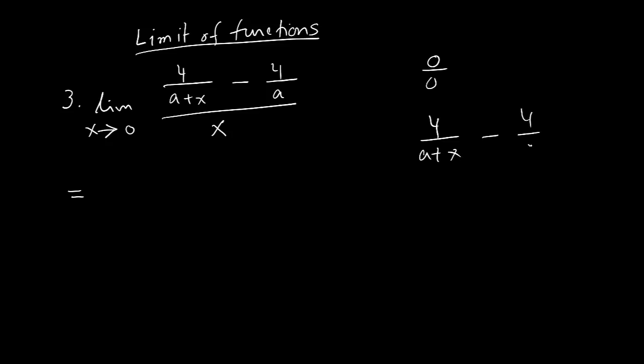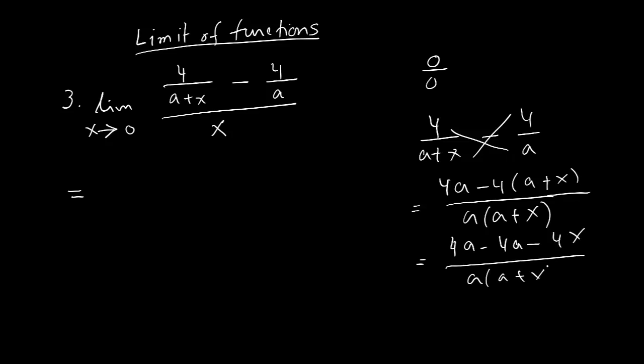And what we do here, simplify the numerator. When you have 4 over a plus x minus 4 over a, I can just write a times a plus x, which is the common denominator concept. I also use like this one multiply together and then multiply this and this over a, then a plus x. Now 4a, 4a will cancel out, and finally you are getting limit goes to 0. X in the top.